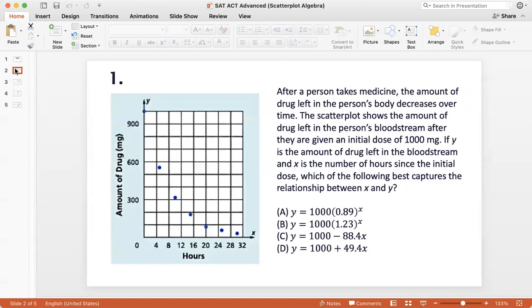So here we'll start with scatterplot algebra question one. After a person takes medicine, the amount of drug left in the person's body decreases over time. The scatterplot shows the amount of drug left in the person's bloodstream after they are given an initial dose of 1000 milligrams. You can see that the first data point is at 1000 milligrams and then the curve shows a decline as the time passes. If y is the amount of drug left in the bloodstream and x is the number of hours since the initial dose, which of the following best captures the relationship between x and y. So if I try and plot this curve, I can see that this would be an exponential curve. It's not a linear curve because it's not going like this.